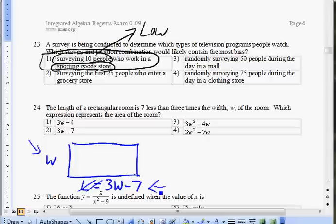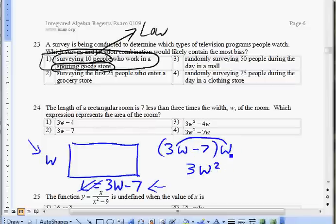To get the area of the room, I need to multiply these two. Area is length times width, so length is 3w minus 7 and width is w. Use the distributive property: w times 3w is 3w squared, and w times negative 7 is minus 7w. That is how you represent the area of the room. This is choice four.